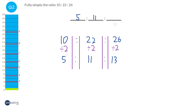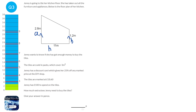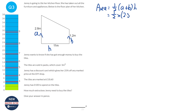The first thing we need to do is work out the area of the floor, and you'll notice that this is a trapezium. With a trapezium, the formula is half times (A plus B) times H, where A and B are the parallel sides and the height is the one connecting the two parallel sides. So it would be half times (2.8 plus 1.2) times 11, and when we do that we get 22.